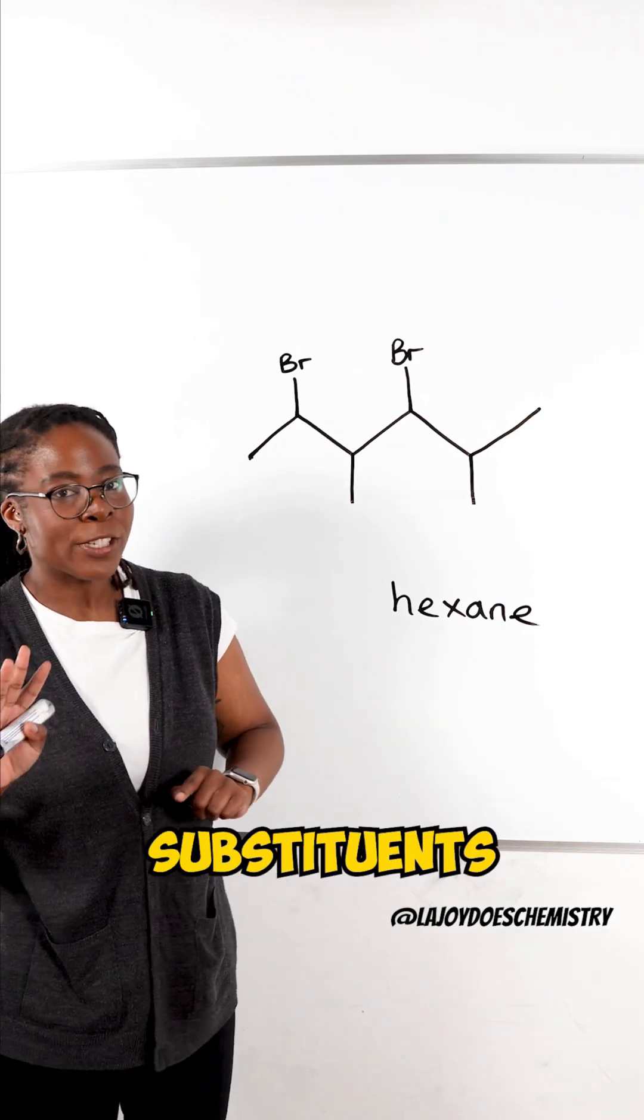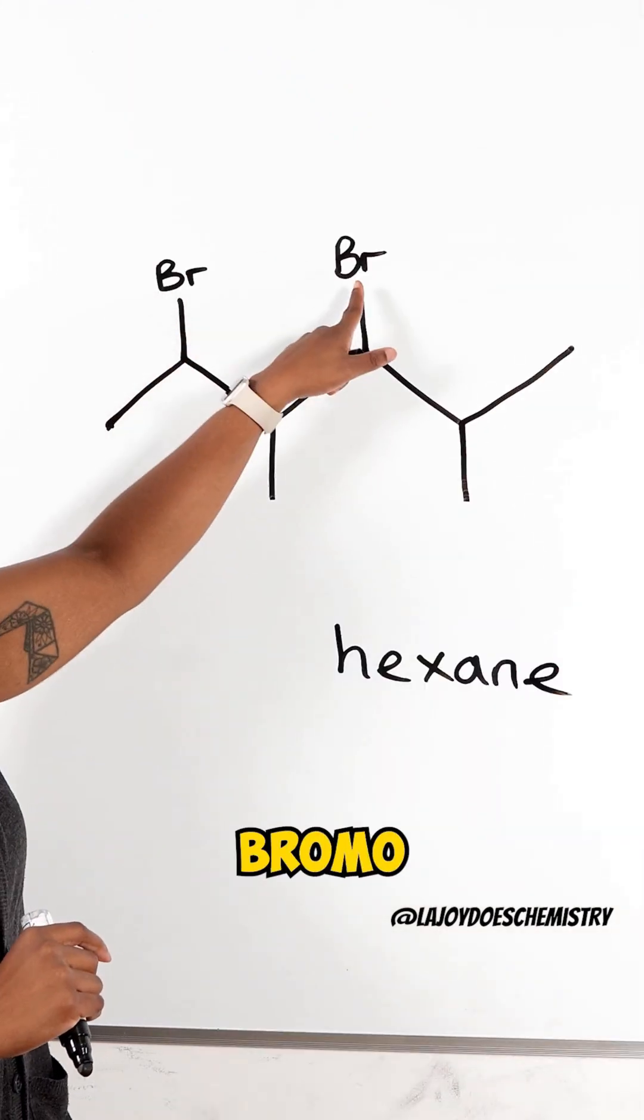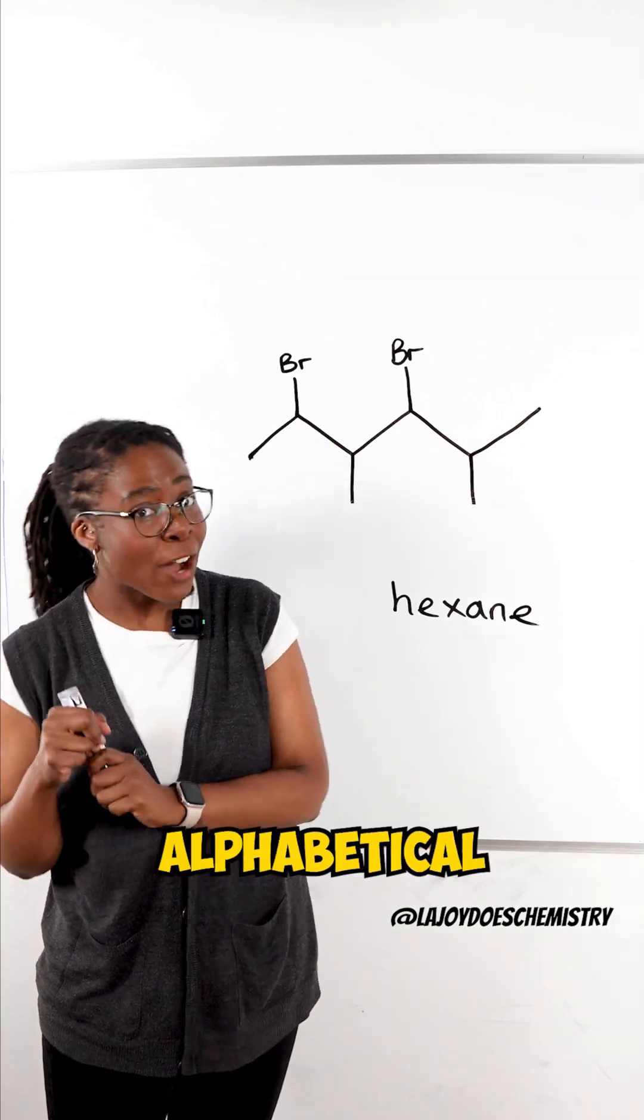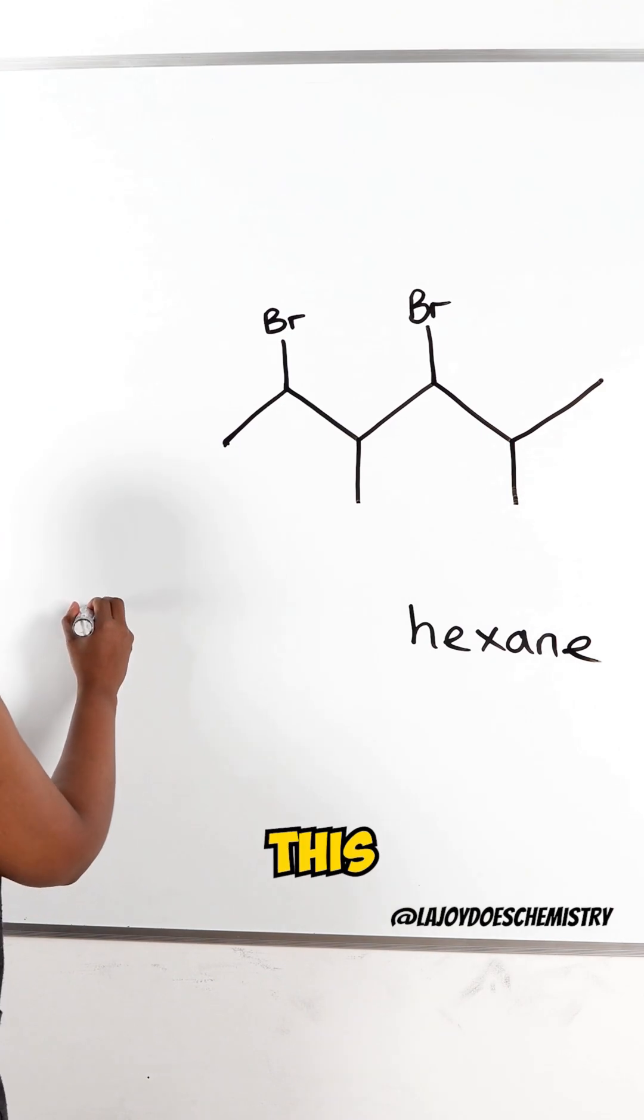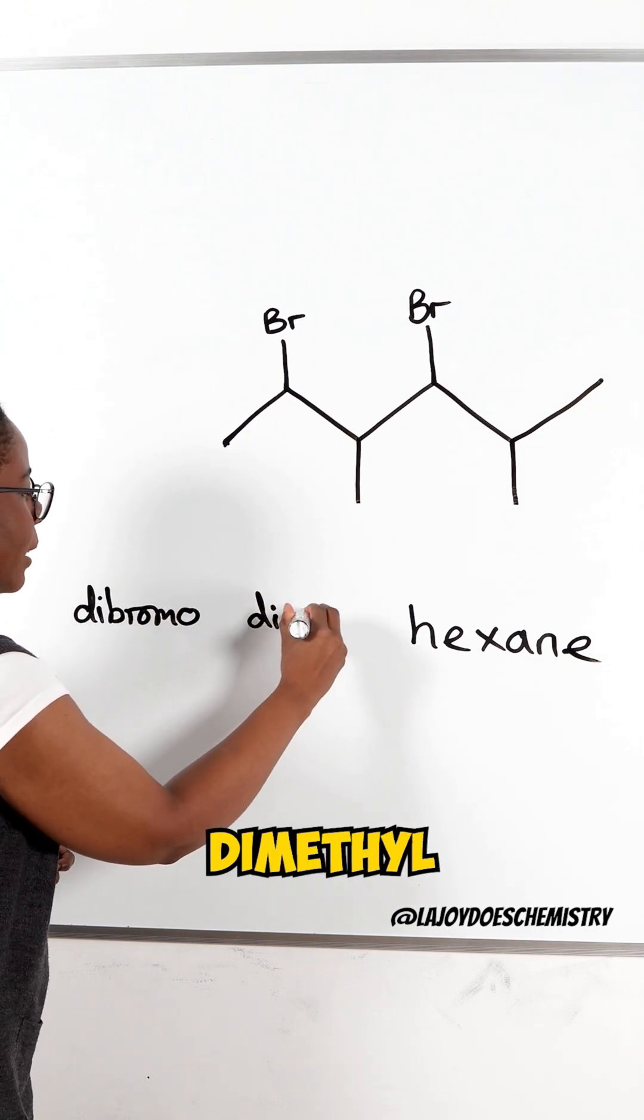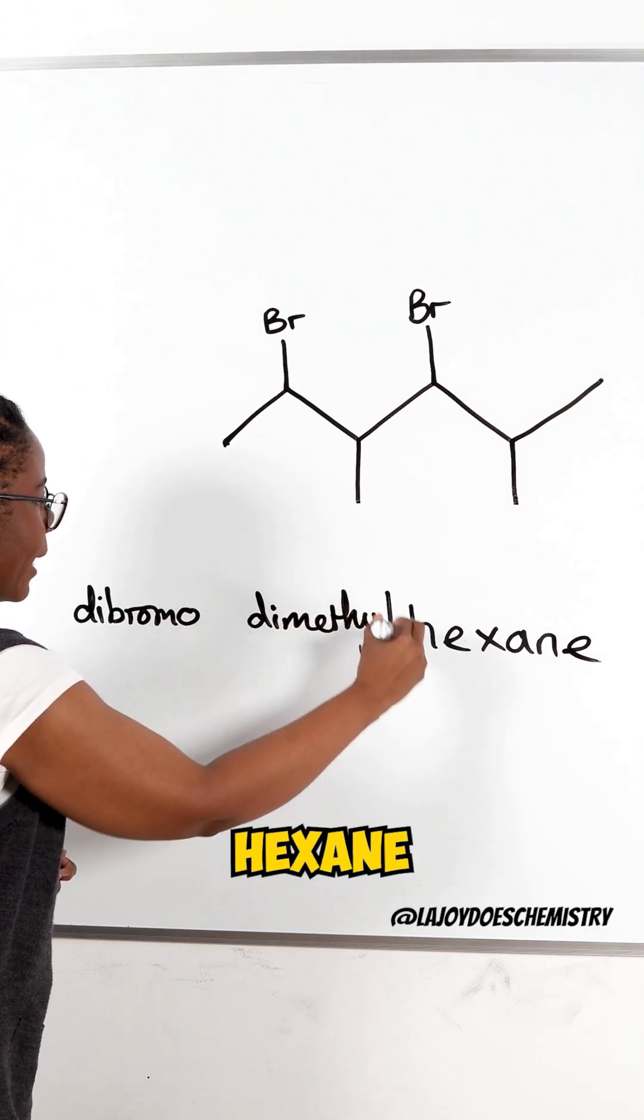Now we've got two different substituents. We have these two bromo groups and these two methyl groups. Of course those need to be in alphabetical order making this dibromo dimethyl hexane.